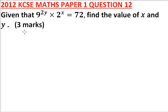2012 KCSE Paper 1, question 12. We are told: given that 9 to the power 2y multiplied by 2 to the power x is equal to 72, find the value of x and y.